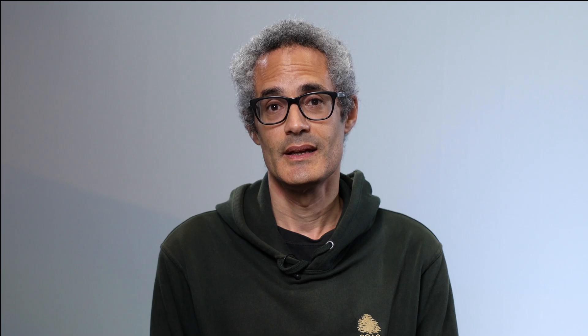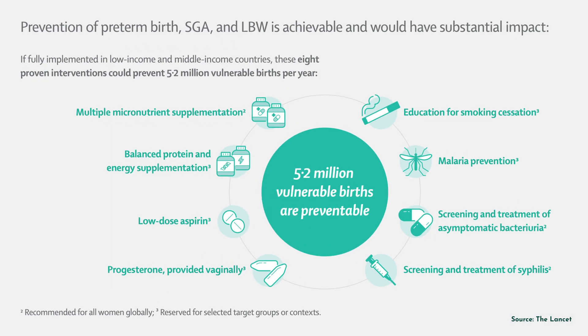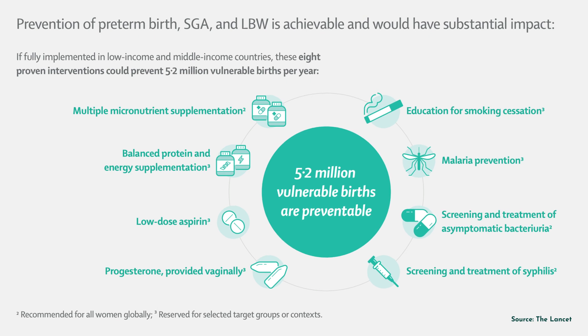Paper four did a look at the literature to identify what interventions exist, and a list of about eight came up. Of these eight, there are three that all pregnant women should be getting: multiple micronutrient supplements, smoking cessation education, and screening and treating for bacteriuria.